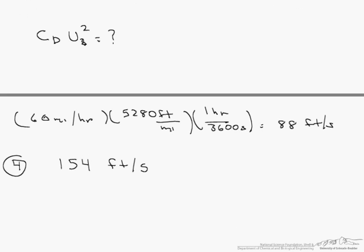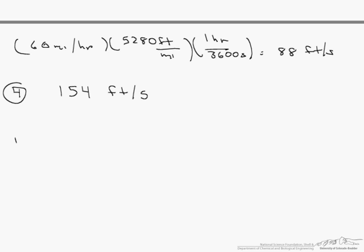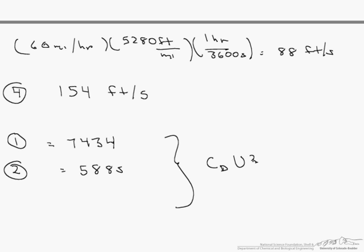Now let's calculate that Cd times U squared. When we do it for truck one, our Cd times U squared equals 7434, and that is with a drag coefficient of 0.96. Truck two is 5885, and remember this is all for Cd times U squared. That drag coefficient, that lower one caused by the fairing, lowers our Cd times U squared.